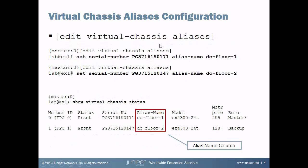With Junos 14.1, a new option was added under the Edit Virtual Chassis branch in the configuration hierarchy called Aliases. The command is straightforward: under the Edit Virtual Chassis aliases branch in configuration mode, you say set serial-number followed by the serial number of the switch. This number must be correct.